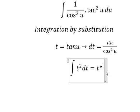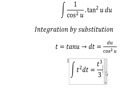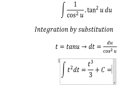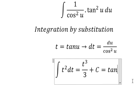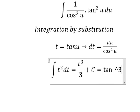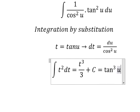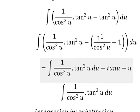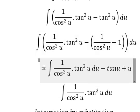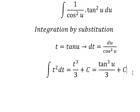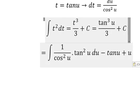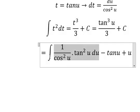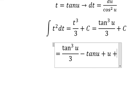And we got t to the power of 3 over 3 plus c, and t change back to tan u. Now we need to return back. So after we calculate, we change this integral into like this and we put c in here.